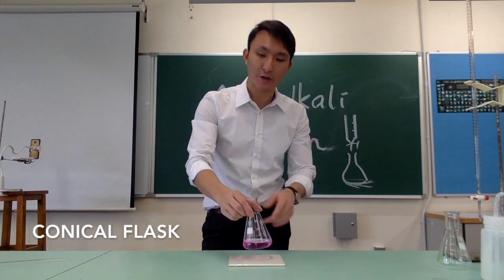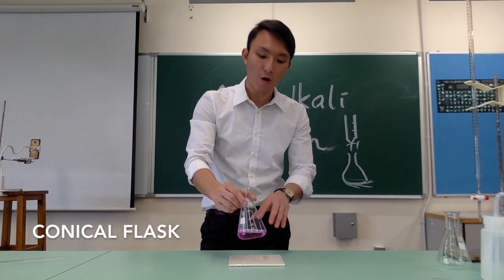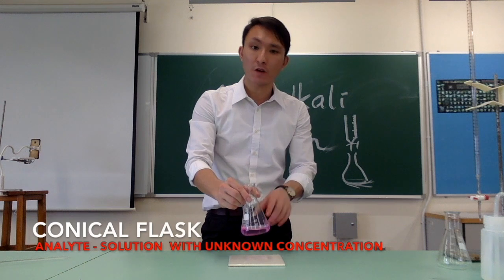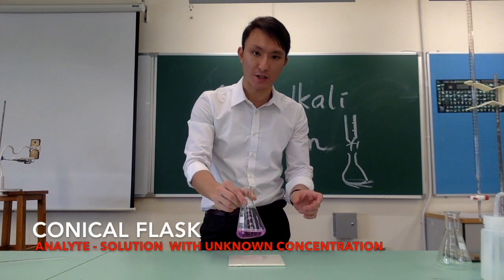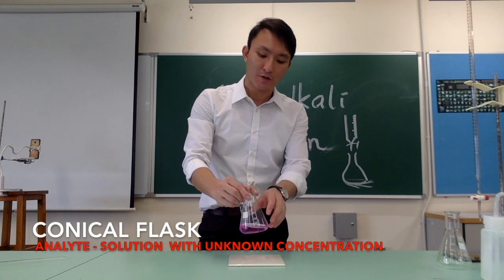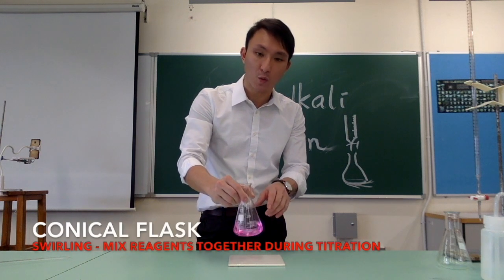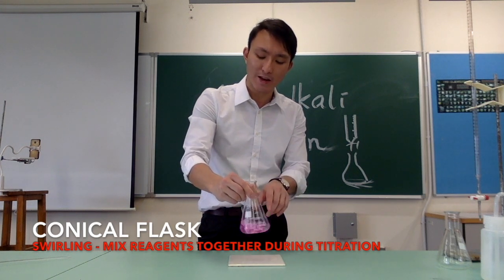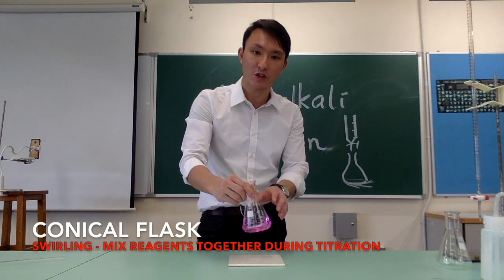The first apparatus is a conical flask. A conical flask is so called because it has a cone shape. The function of a conical flask is to hold the analytes of the titration. The reason why we use a conical flask is because we can do a swirling motion, which allows the analytes and the titrant to mix well during the titration.